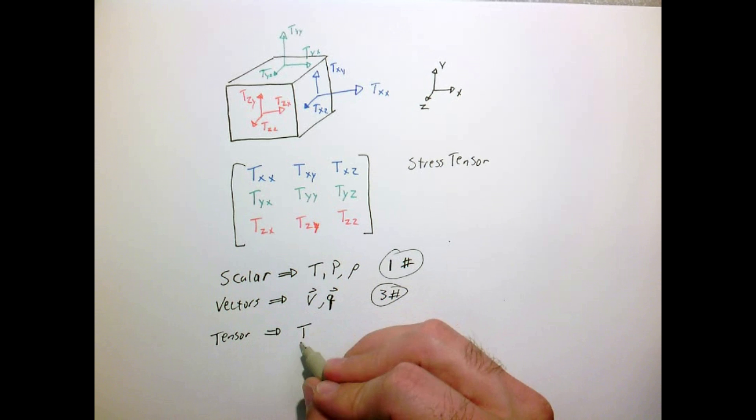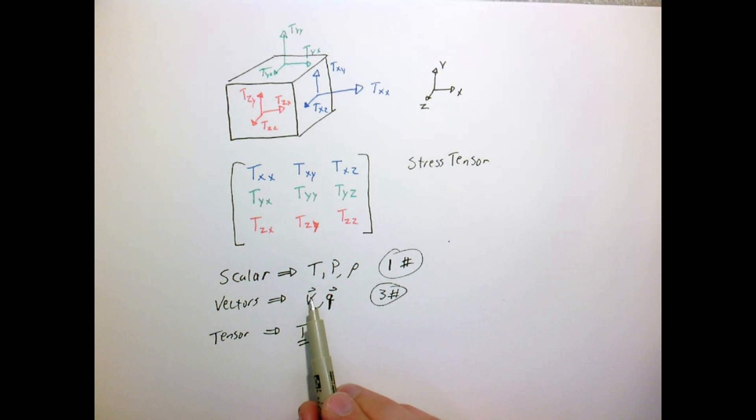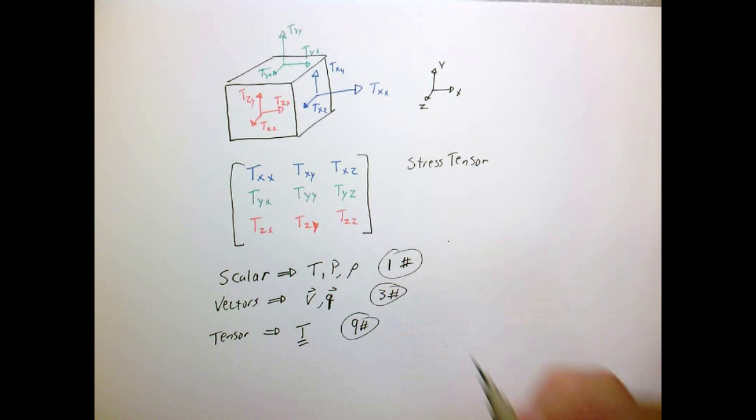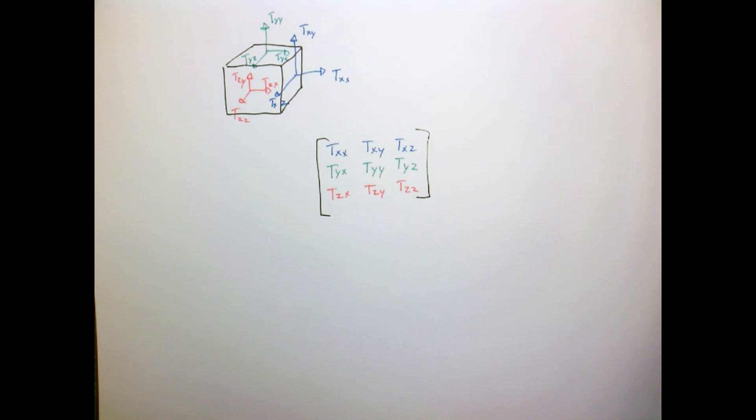Tensor is things like stress. Like with a vector, I usually put an arrow over it. When I'm writing to denote a tensor, I'll usually put two lines on it just to remind myself that it's a tensor, and it's described by nine numbers, or a three by three matrix.